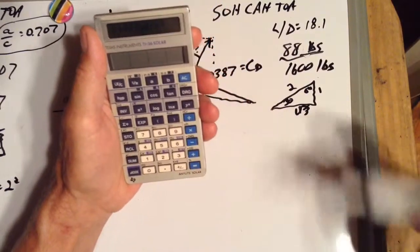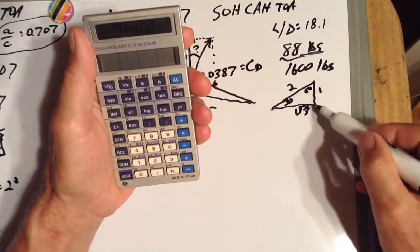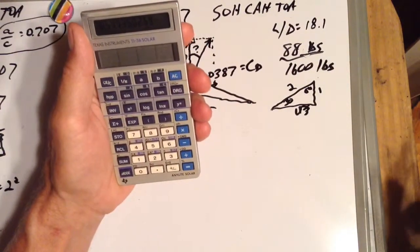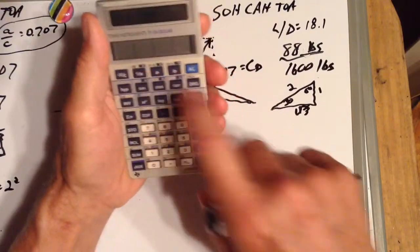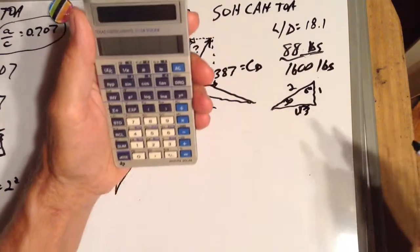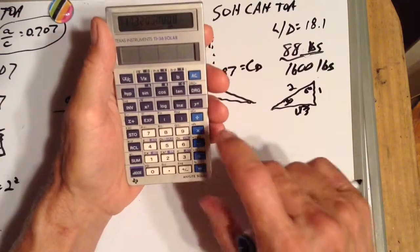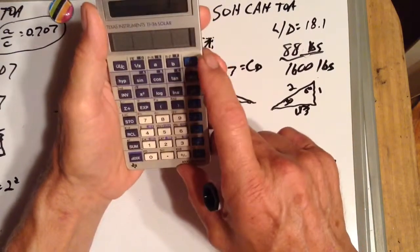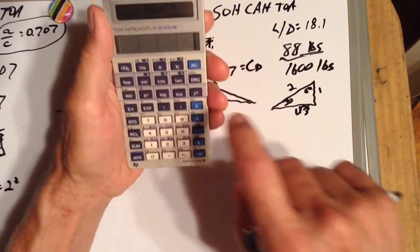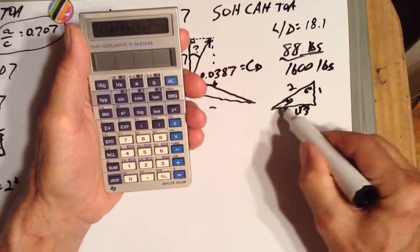30 tan, so it's 0.577. That divided by that is 0.577. If we hit our 1 over x, we have that divided by that, which is 1.732, which is square root of 3. If we hit x squared, we'll get 3. But let's go back to our square root of 3.